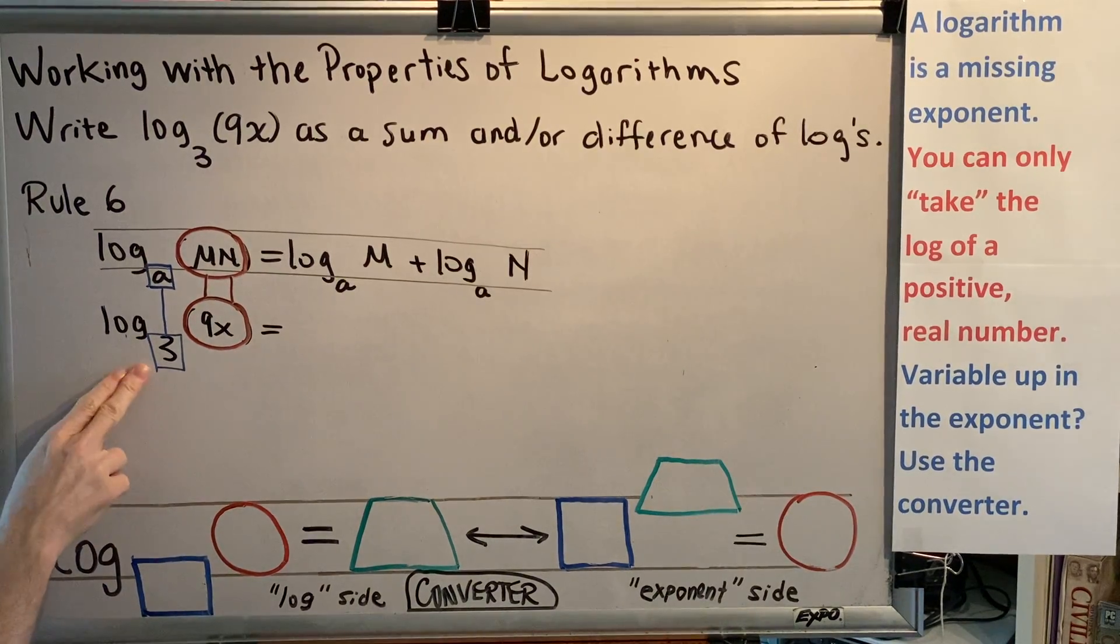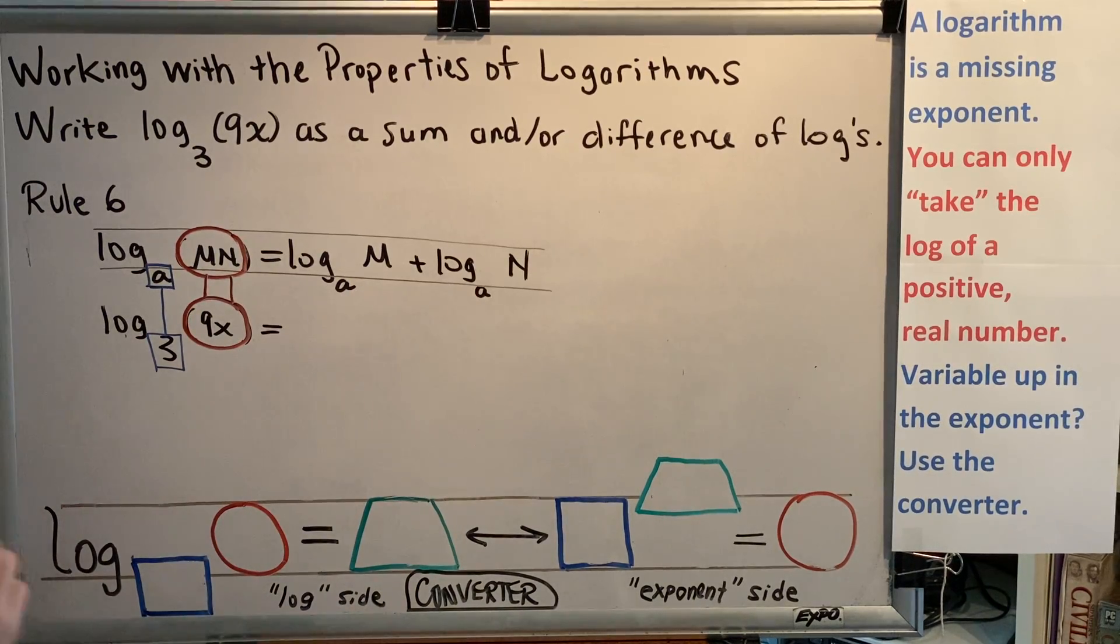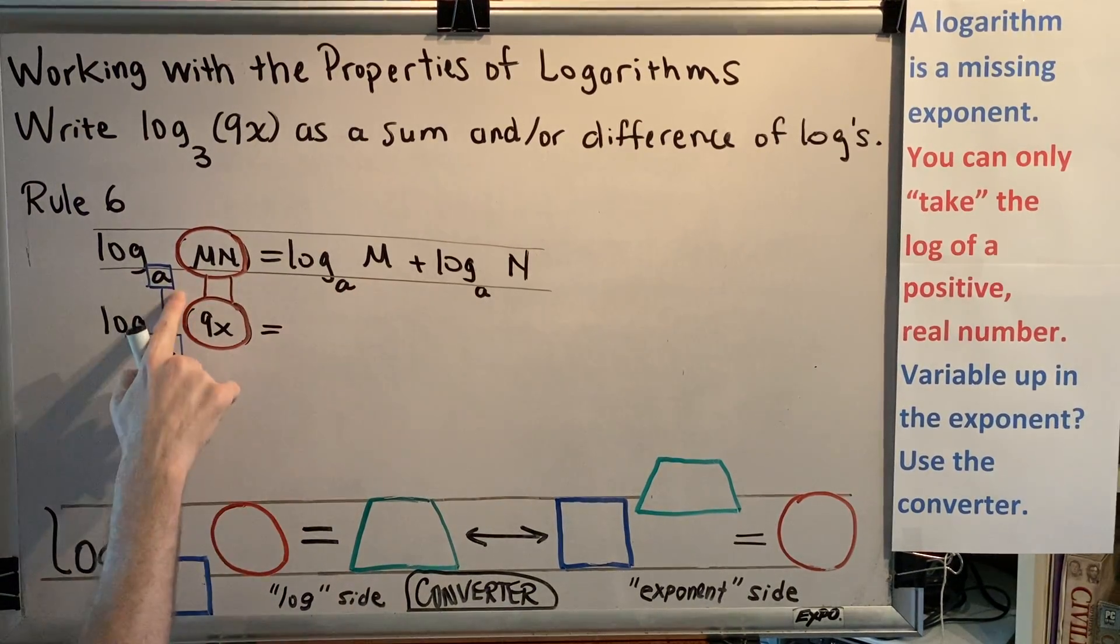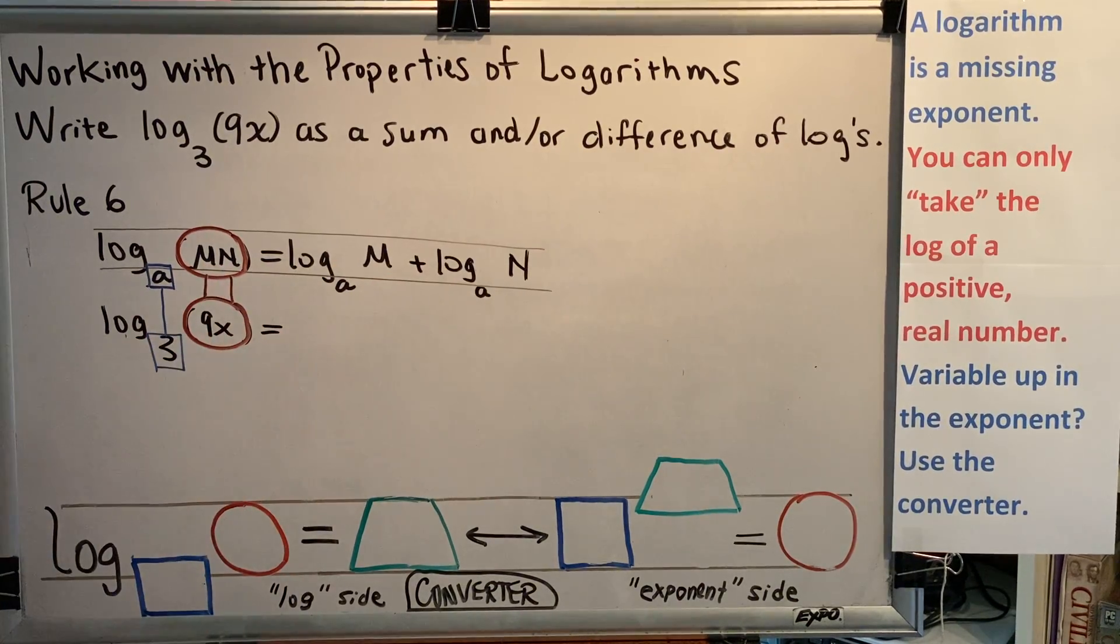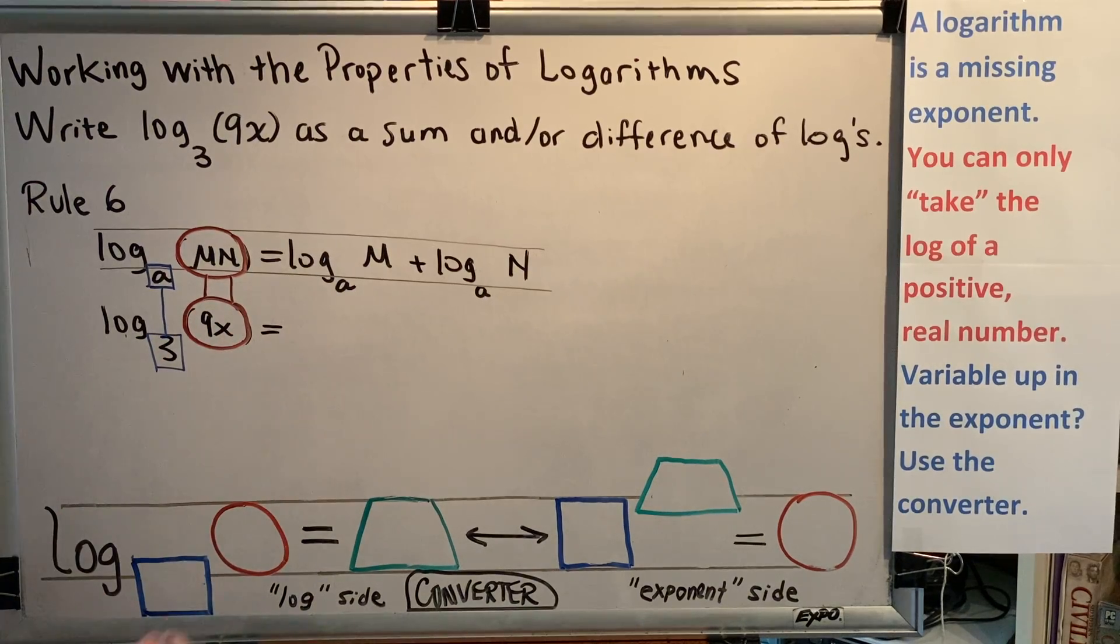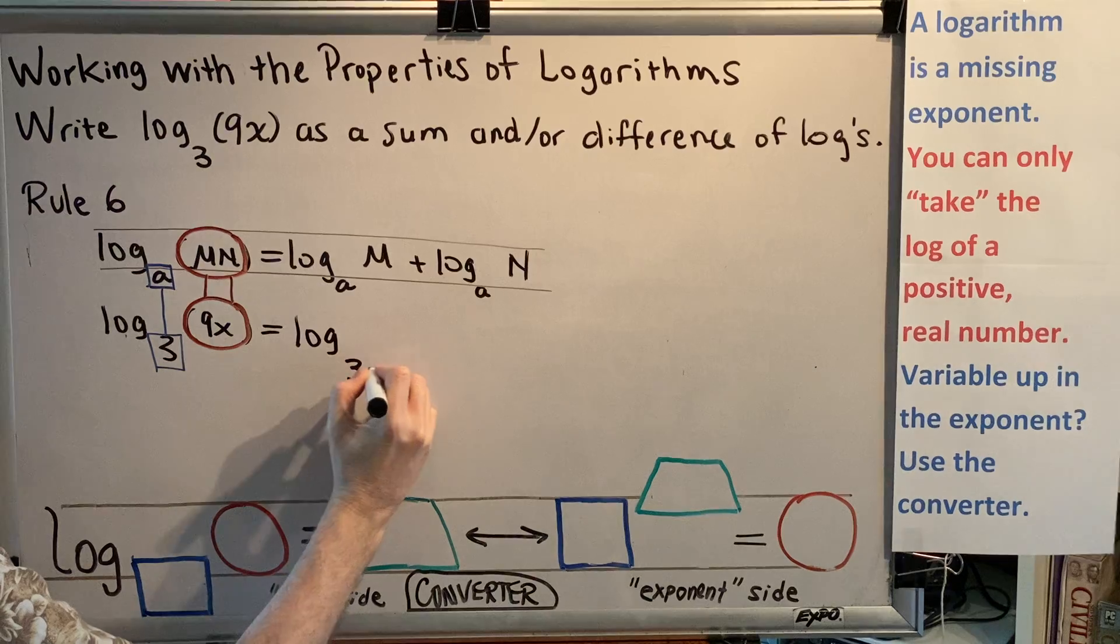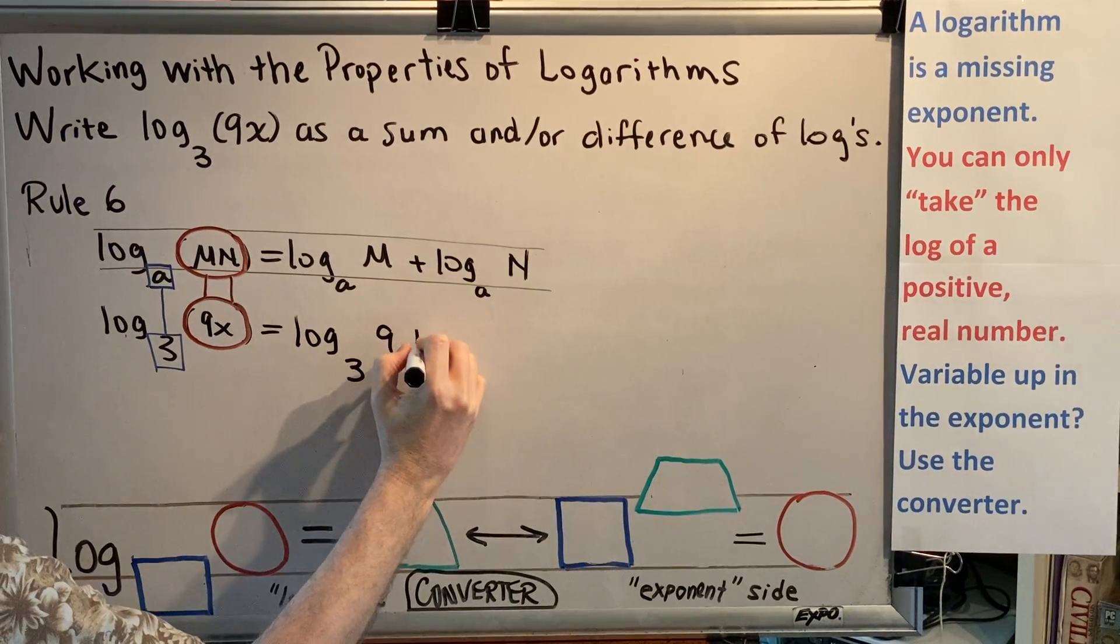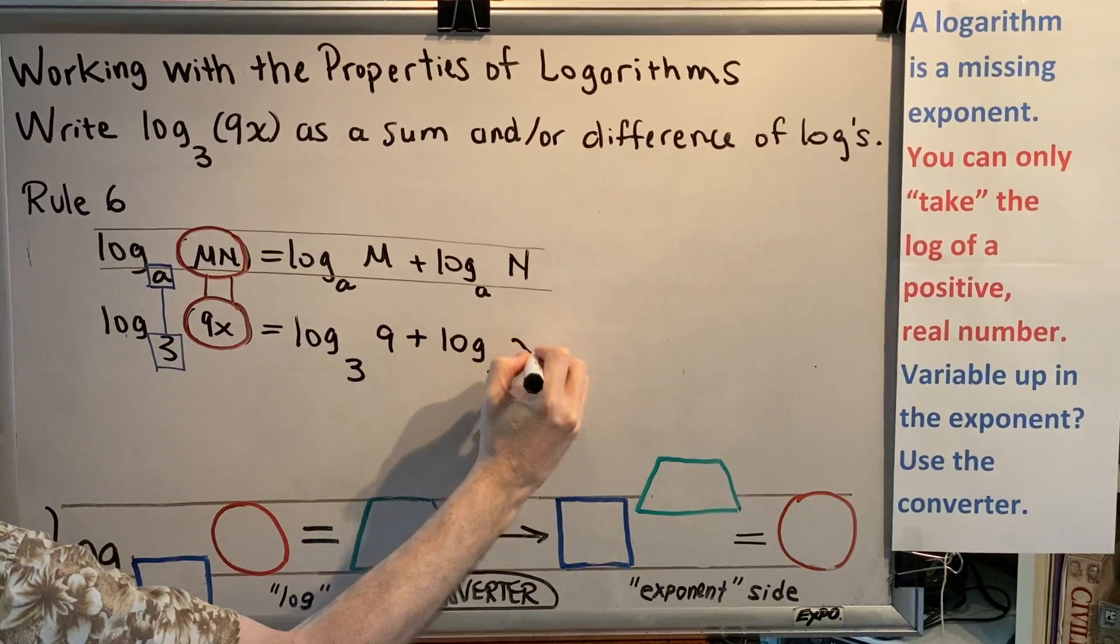So if we want to know how to rewrite our log as two logs being added, we just have to replace a with 3 everywhere we see it, m with 9 everywhere we see it, and n with x everywhere we see it. So we would write log base 3 of 9 plus log base 3 of x.